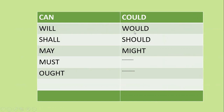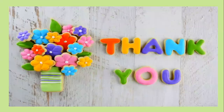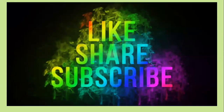Modal changes: 'can' changes to 'could'; 'will' changes to 'would'; 'shall' changes to 'should'; 'may' changes to 'might.' But 'must' and 'ought' have no changes at all. I believe you have understood transforming direct speech into indirect speech very well. When you want to change indirect speech back into direct speech, the reversal process applies. Thank you for listening patiently — please comment, like, share, and subscribe!